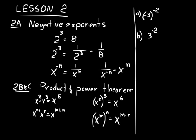Let's do some practice problems. For practice problem A, simplify negative 3 inside parentheses to the negative two power. We need to make the exponent positive — that should be the first thing that comes to mind when you see a negative exponent and the problem says simplify. Move the number to the denominator: 1 over negative 3, keep it in parentheses, with a positive exponent of 2. That gives 1 over 9, because negative 3 times negative 3 is positive 9. So the answer is 1 over positive 9.